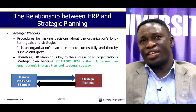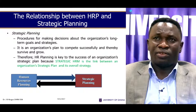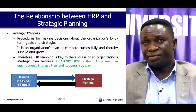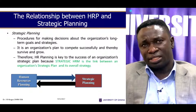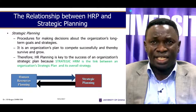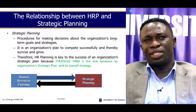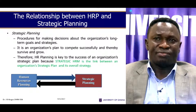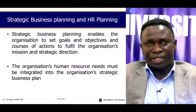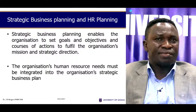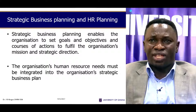The relationship between human resource planning and strategic planning: strategic planning includes the procedures for making decisions about the organization's long-term goals and strategies. It is an organization's plan to compete successfully and thereby survive and grow in this turbulent world. Human resource planning is a key to the success of an organization's strategic plan because strategic human resource management is the link between an organization's strategic plan and its overall strategy. Strategic business planning enables the organization to set goals and objectives and courses of action to fulfill the organization's mission and strategic direction. The organization's human resources needs must be integrated into the organization's strategic business plan.